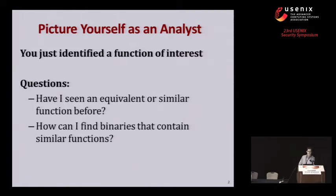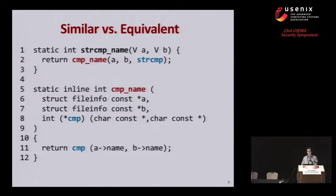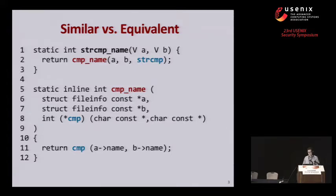To give a little more intuition, let's look at a simple example from the ls utility in GNU coreutils. With ls, you can get a directory listing and sort entries by file or object names. The sorting comparison is implemented by the strcmp_name function shown in lines 1 to 3. Basically, this function calls cmp_name and tells it to use the string compare function from libc, passing in two file_info structures corresponding to two filesystem elements to be compared. The cmp_name function then calls the function pointer — in this context always the string compare function from libc — and passes the name element of the file_info structure.